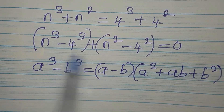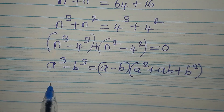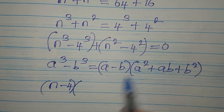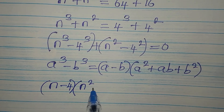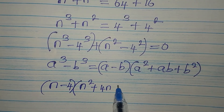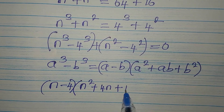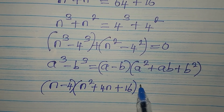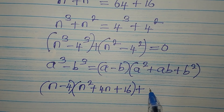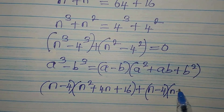We express n³ minus 4³ in that form: (n minus 4) times (n² + 4n + 16). Then for n² minus 4², we use the difference of two squares, which gives us (n minus 4)(n plus 4).